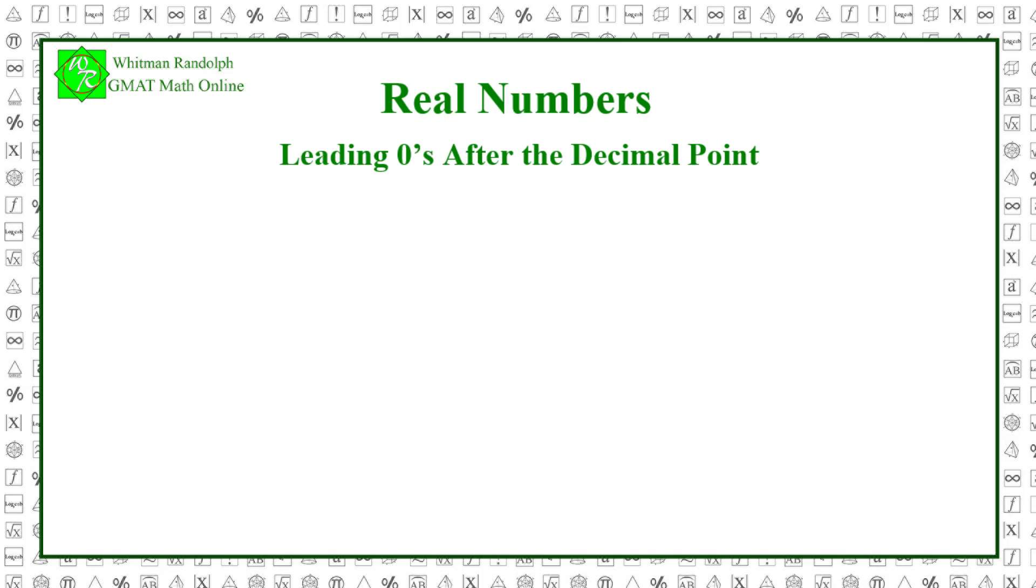Next we look at leading zeros after the decimal point. The number .0000183 has 5 leading zeros after the decimal point. This can be important in certain calculations because in scientific notation, .0000183 equals 1.83 times 10 to the minus sixth. Numbers expressed in scientific notation are extremely valuable in physics, chemistry, engineering, and other branches of science.